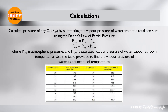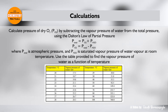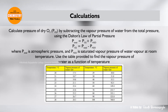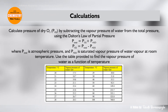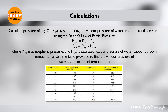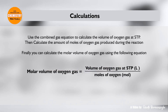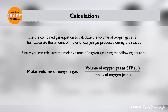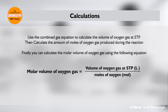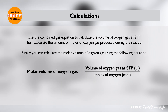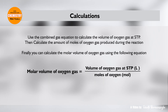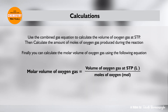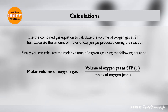Calculations: Calculate the pressure of dry oxygen by subtracting the vapour pressure of water from the total pressure using Dalton's law of partial pressure. Use the table provided to find the vapour pressure of water as a function of temperature. Use the combined gas equation to calculate the volume of oxygen gas at STP. Then, calculate the amount of moles of oxygen gas produced during the reaction. Finally, you can calculate the molar volume of oxygen gas: molar volume of oxygen gas equals volume of oxygen gas at STP divided by moles of oxygen.